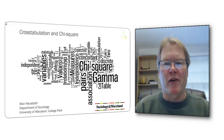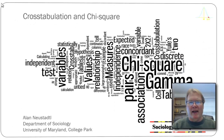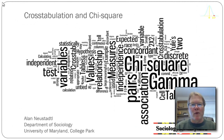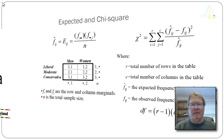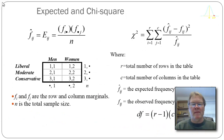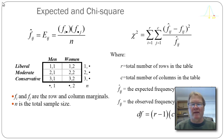Let's go ahead and review the chi-square statistic. To calculate chi-square, we first have to calculate the expected value in each cell in a contingency table.